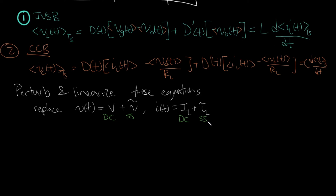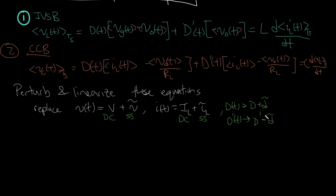We also do this with D. D(t) becomes D̄ + d̃, and D′(t) becomes D̄′ − d̃(t). Why? Because if D increases by a little bit, D′ must decrease by a little bit, since D + D′ equals 1 at all times. Let's apply this perturbation step to IVSB and CCB.